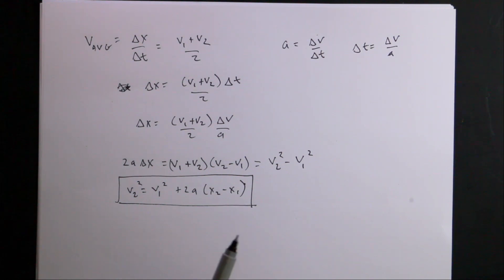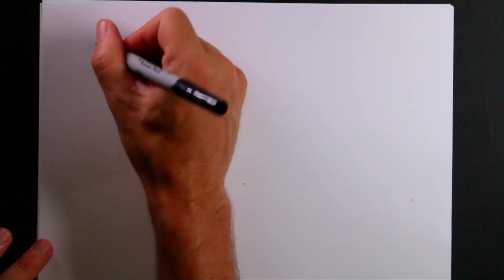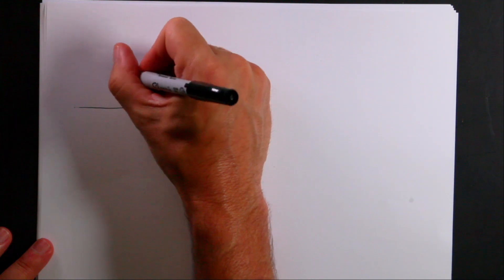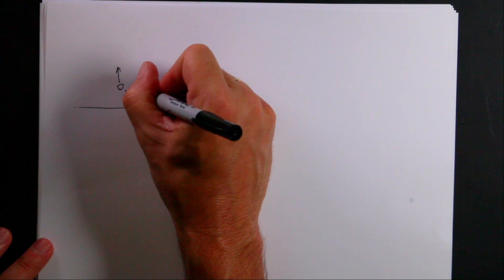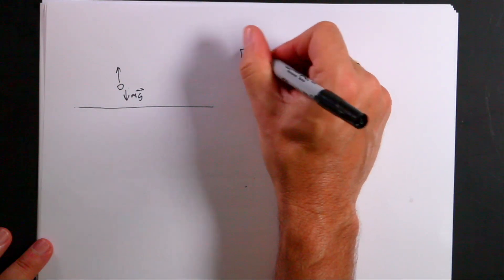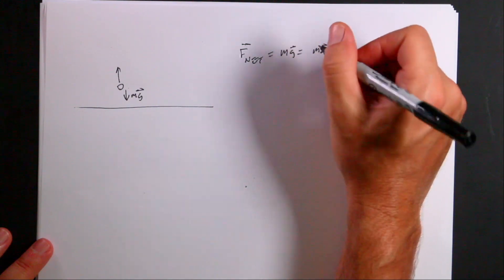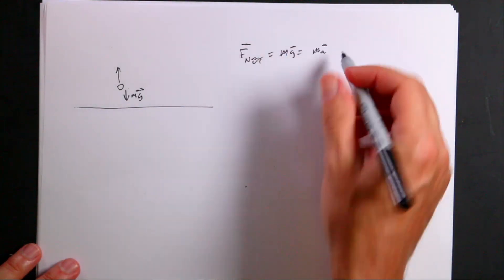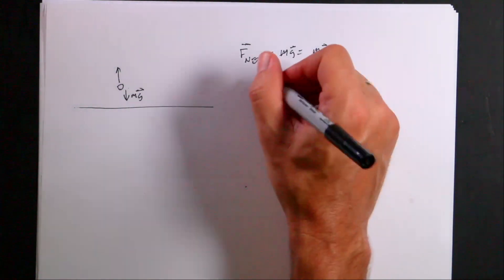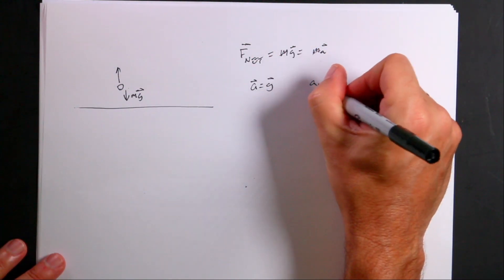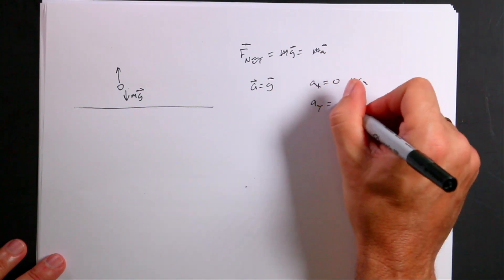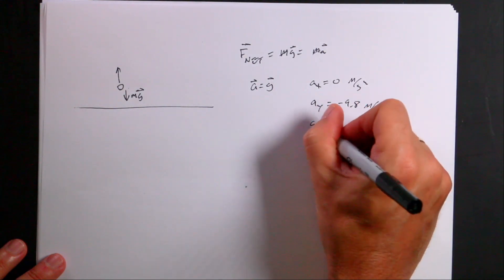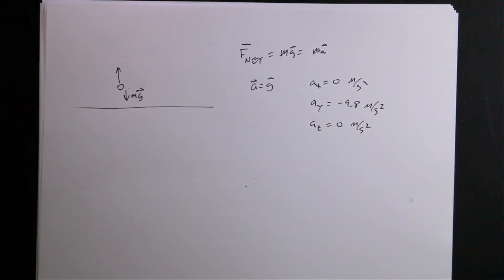Now the other two things we need to talk about are free fall and projectile motion. If I throw an object straight up, the only force acting on it is the downward gravitational force mg. So F net equals mg equals ma, the mass cancels, and you get A equals G. This gives AX equals zero, AY equals negative 9.8 meters per second squared, and AZ equals zero. Free fall means the only force acting on it is gravity, so it has a downward acceleration of G.